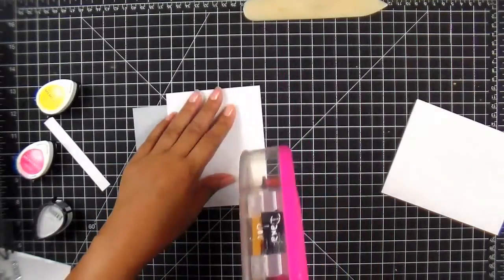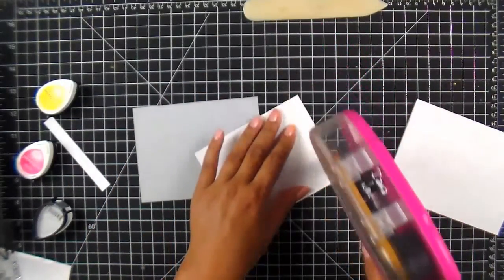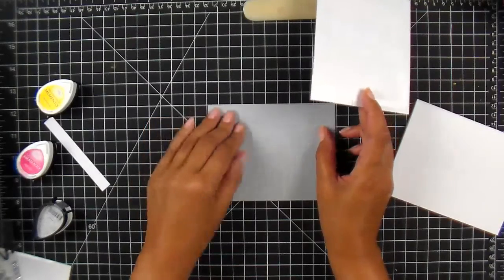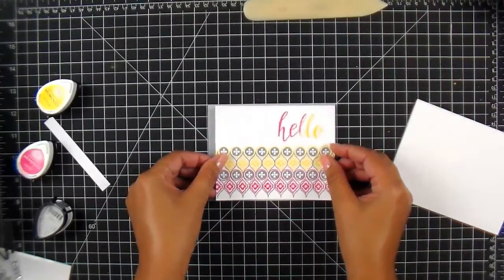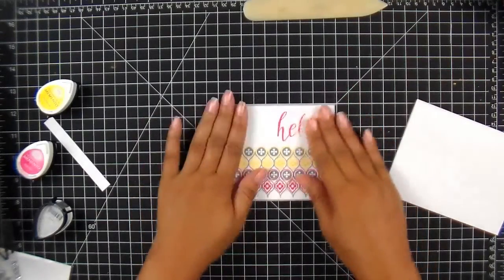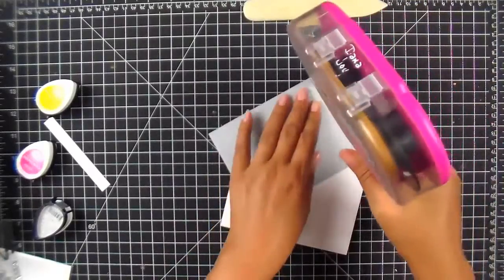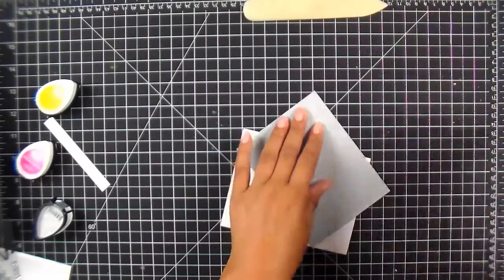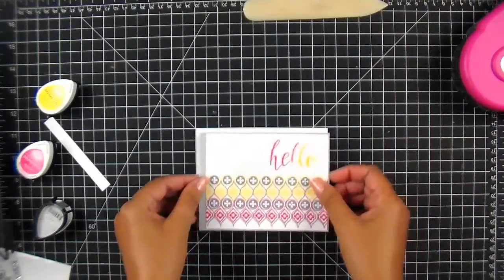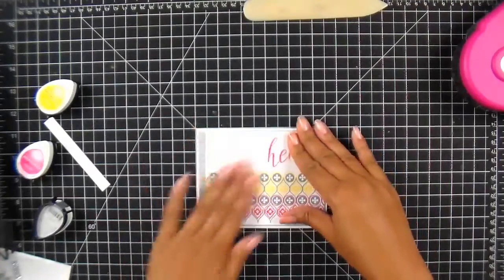All right, easy peasy. Grab my ATG gun and let's go ahead and get this card finished up. All right, I always like to use my grid to make sure I'm lining everything up. Okay, and I'm actually going to bring this one a little bit further to the corner. All right, we can go ahead and put this on our card. I do make sure I have that lined up correctly. Go ahead and put that down. Perfect.